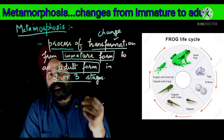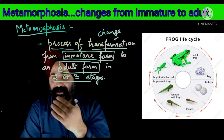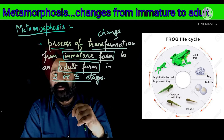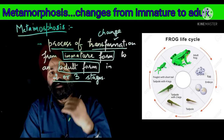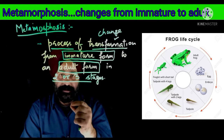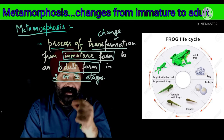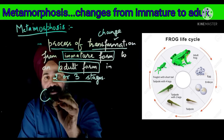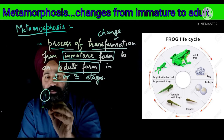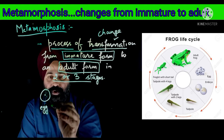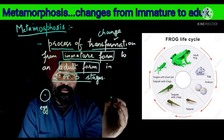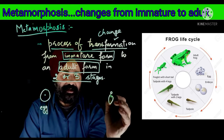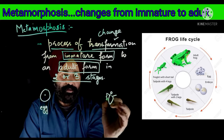For example, we will look at a diagram. If you look at the diagram, you can see that one organism has become the adult form. Each stage leads to the next until the adult form is reached.